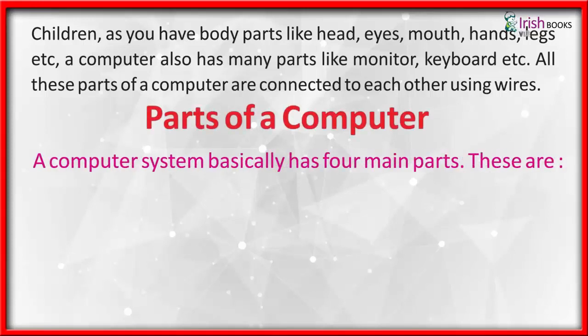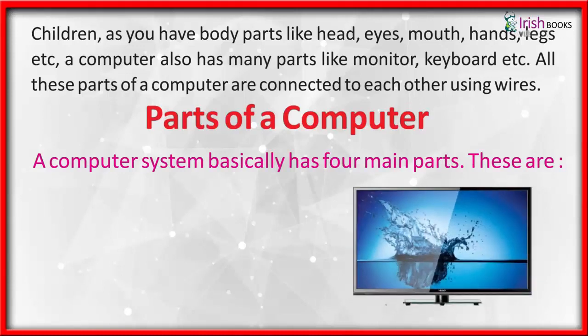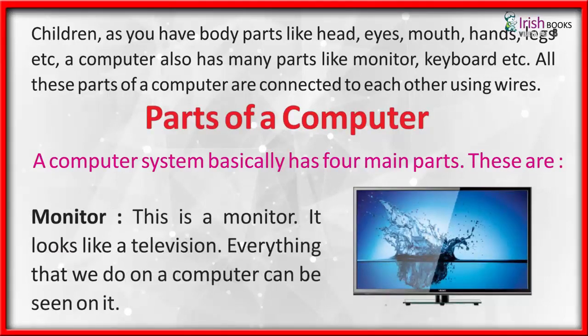A computer system basically has four main parts. The first is the monitor. This is a monitor — it looks like a television. Everything that we do on a computer can be seen on it.